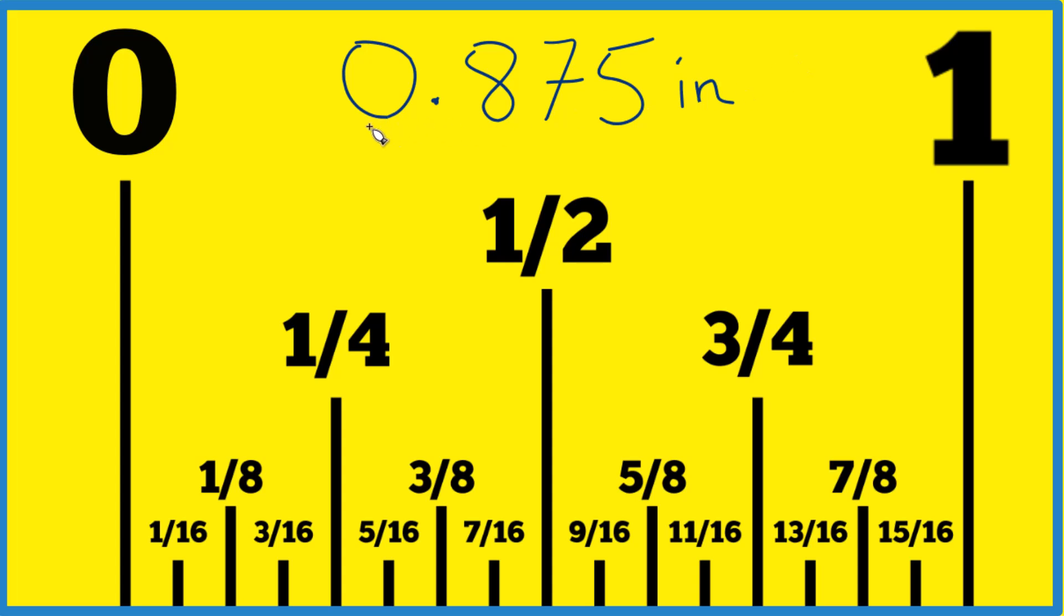The easiest way to do that is consider this 0.875 over 1, then we multiply the top and the bottom, the numerator and the denominator, each one by a thousand.